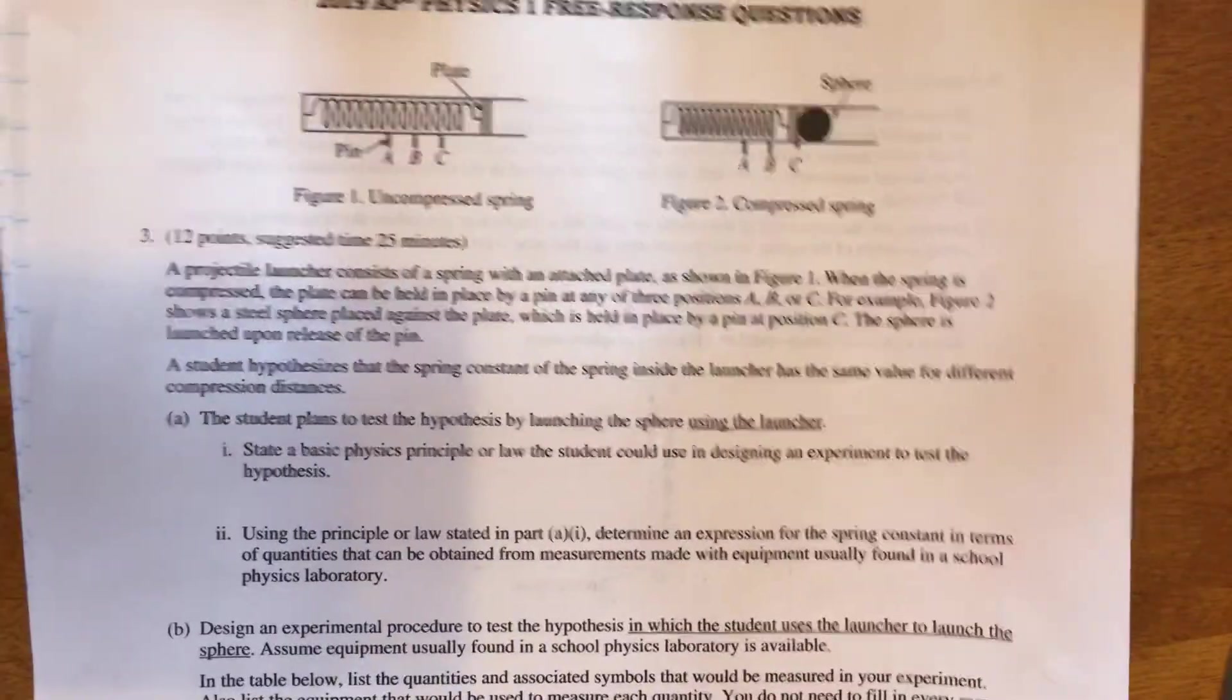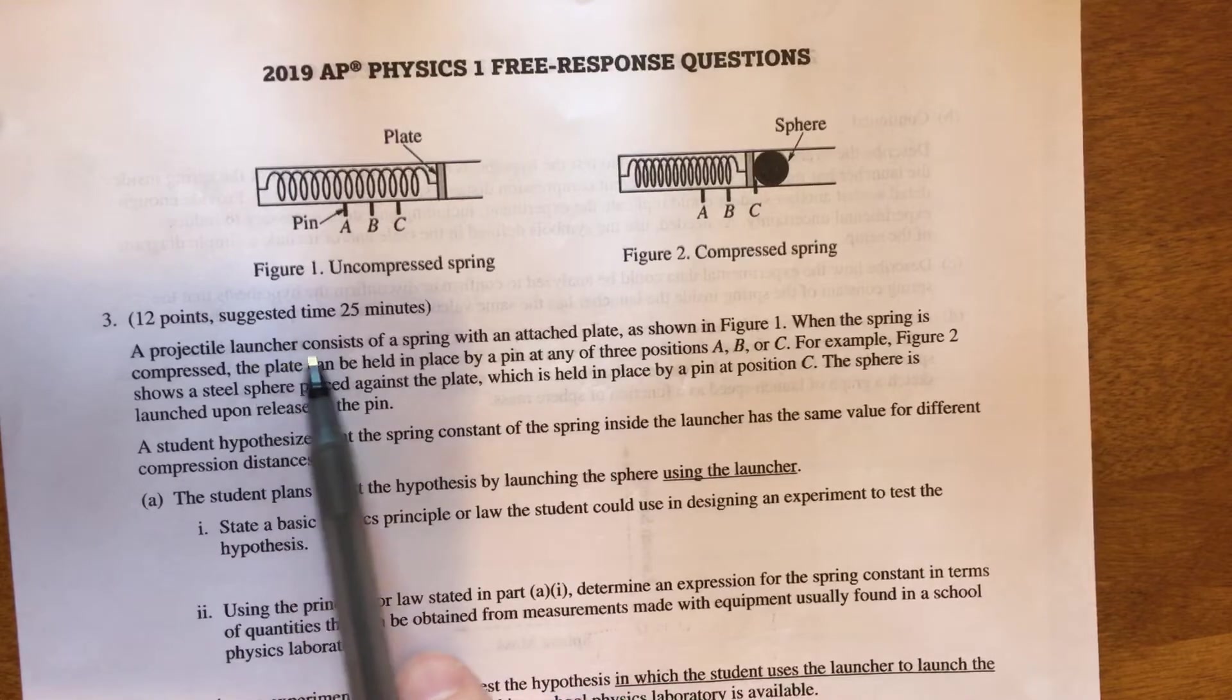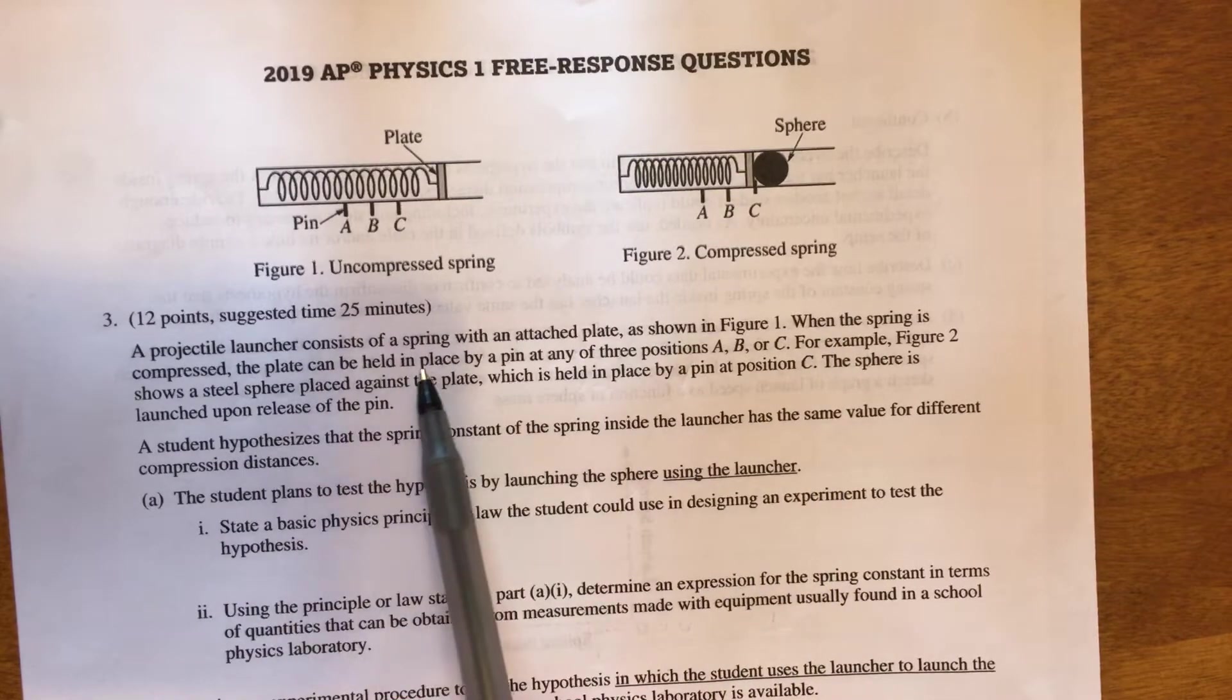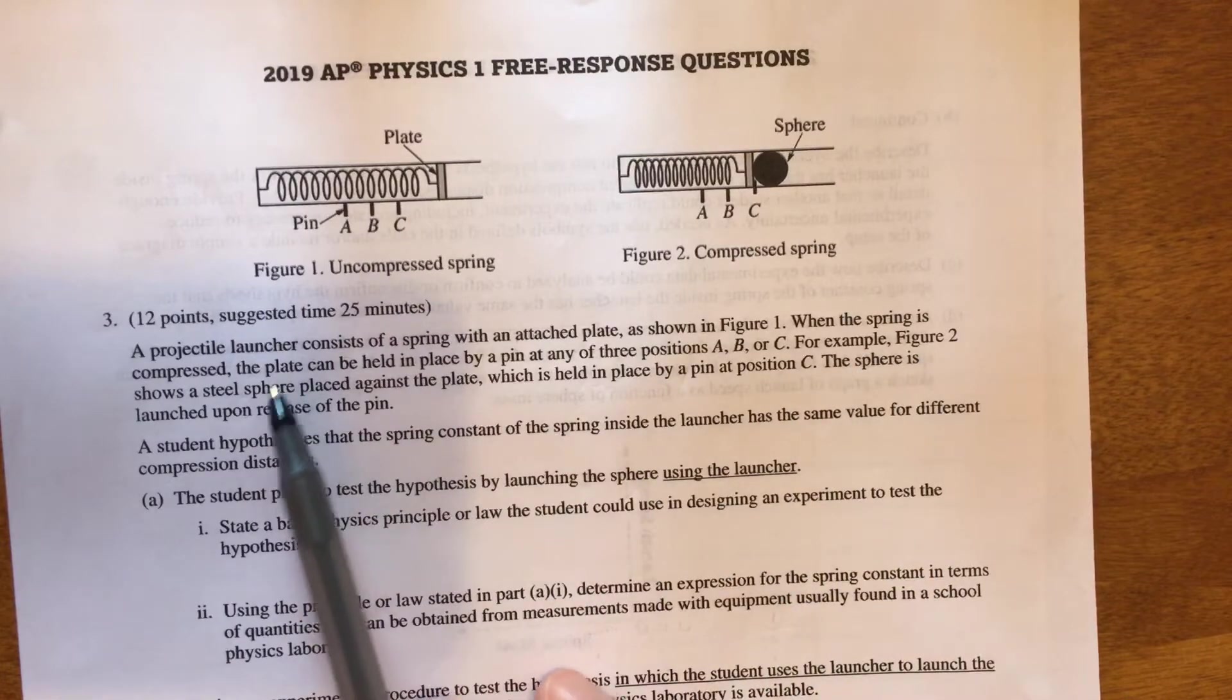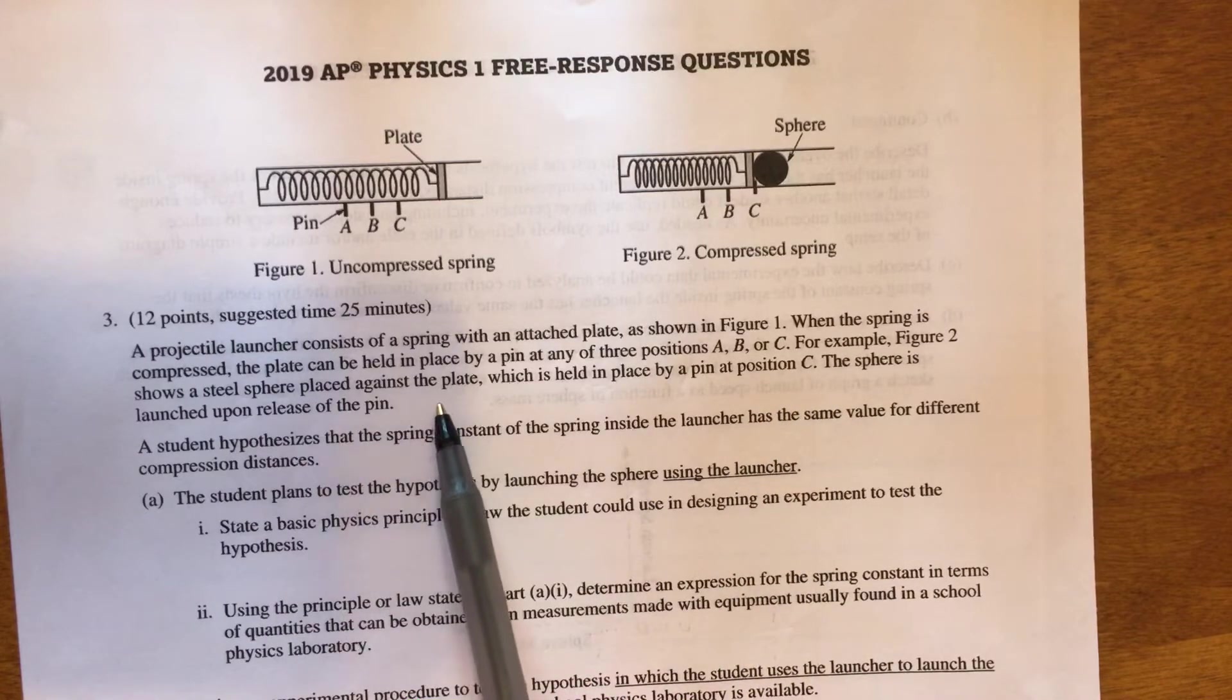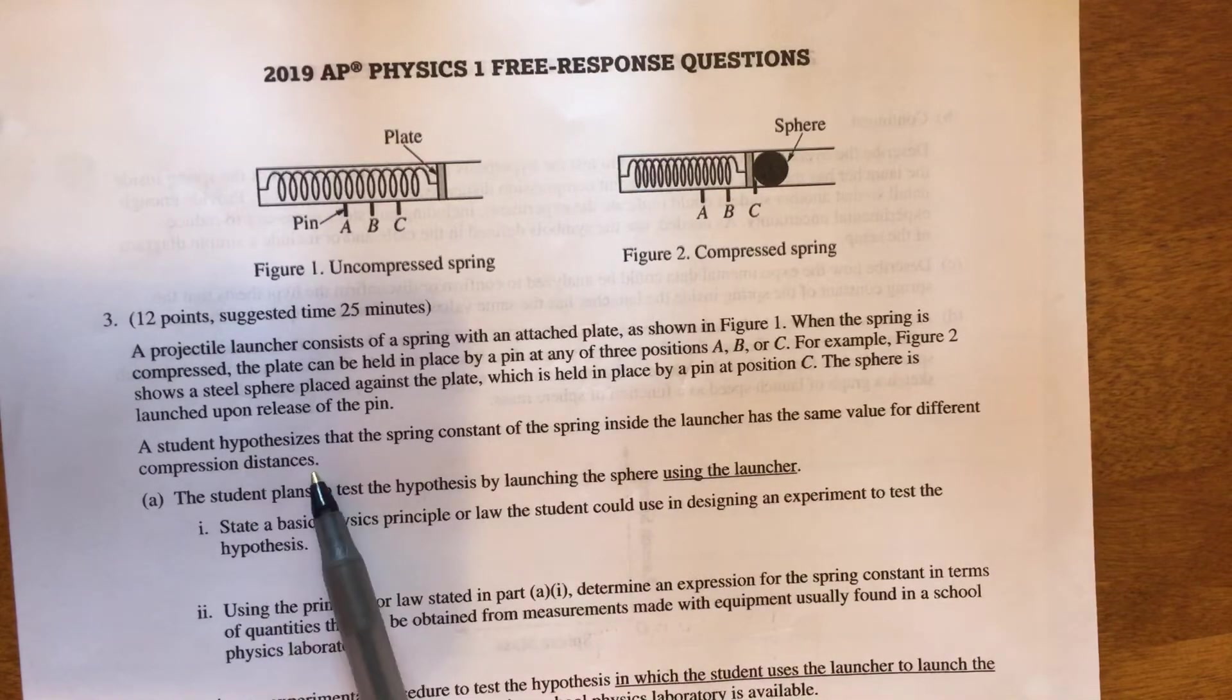We are going to try to figure this one out. Let's go ahead and read through the problem. We've got a projectile launcher consisting of a spring with an attached plate, as shown in this figure. When the spring is compressed, the plate can be held in place by a pin at any of the three positions A, B or C. For example, figure two shows a steel sphere placed against the plate, which is held in place by a pin at position C. The sphere is launched upon release of the pin. The student hypothesizes that the spring constant of the spring inside the launcher has the same value for different compression distances.